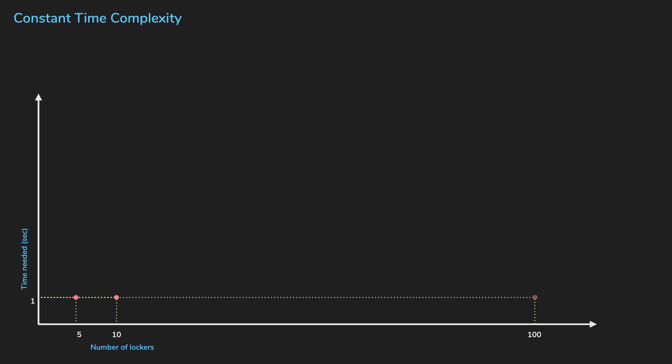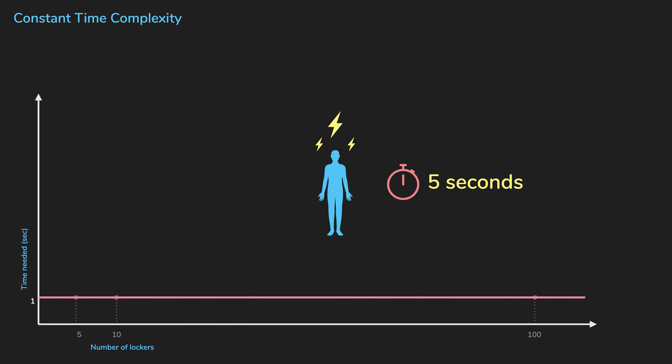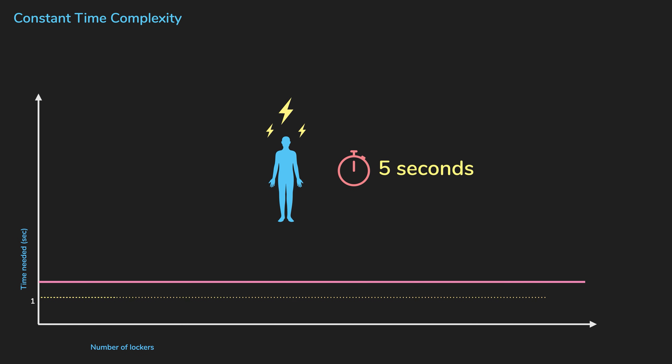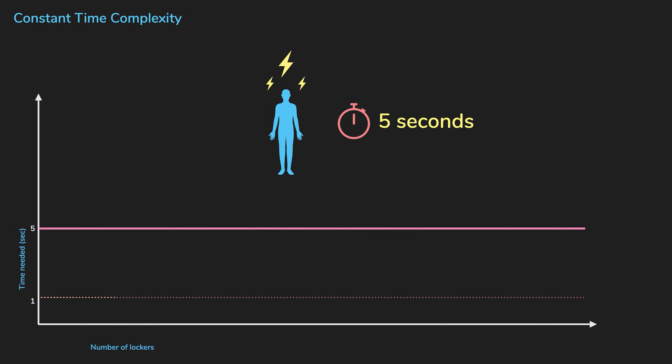Let's say our psychic friend can guess the locker correctly, but it takes five seconds to use their powers. It might be slower than the one-second algorithm, but it's still considered constant time.